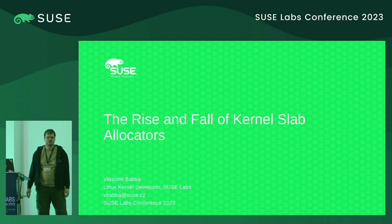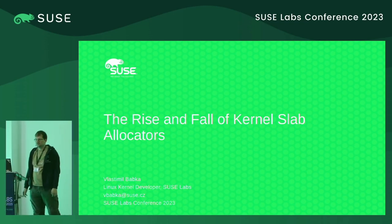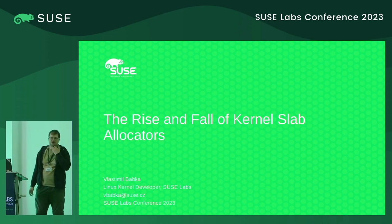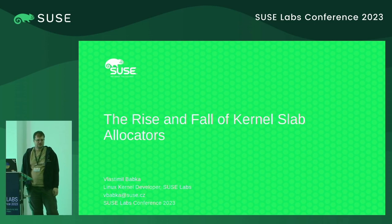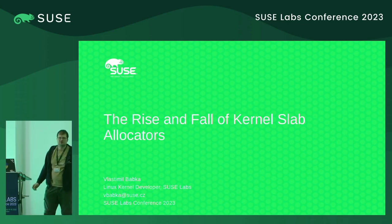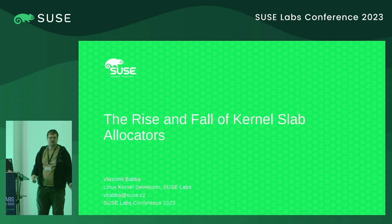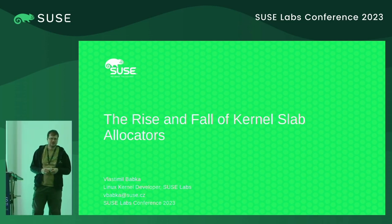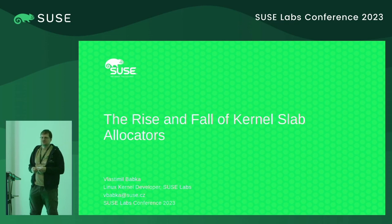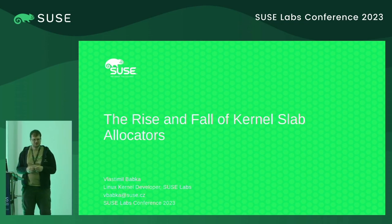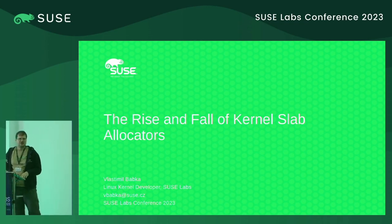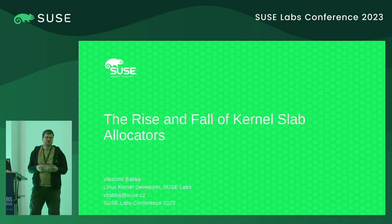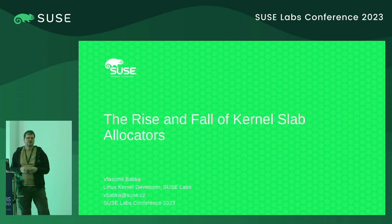My name is Vlastimil. I work in the Core Kernel team on memory management, also upstream. Somehow I also became one of the slab allocator maintainers, which is part of memory management. My idea is that if I shrink the thing it will be easier to maintain, so I'll be talking about how we got three allocators today and why I want them to go back to a single one.